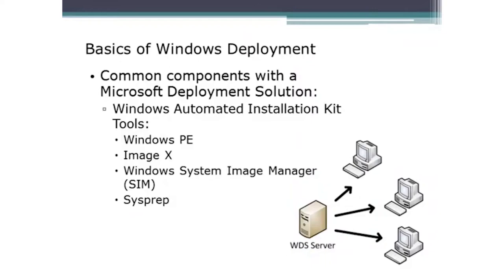Some of the common components you'll work with when it comes to a deployment solution come from the Windows Automated Installation Kit (WAIK). We have Windows PE — a miniature operating system that loads into the memory of the target for the purpose of working with the hard drive. We boot to Windows PE because we either want to deploy an image to the target or the target was the source of an image. We don't want to use the hard drive during this, since it's either the source or destination, so we run in RAM.